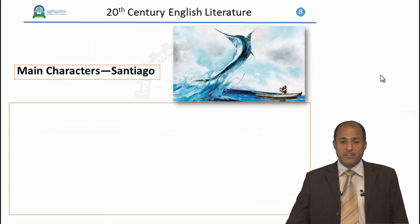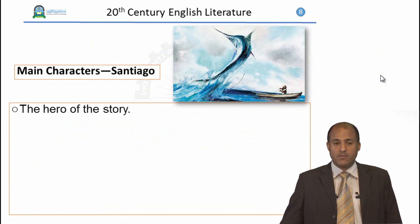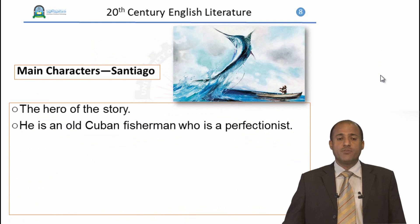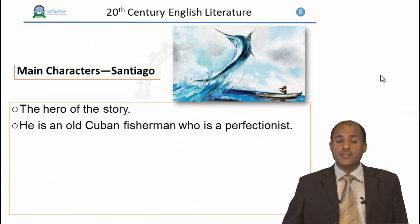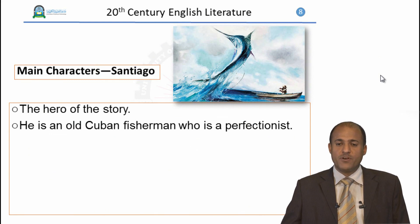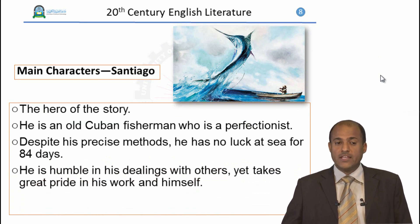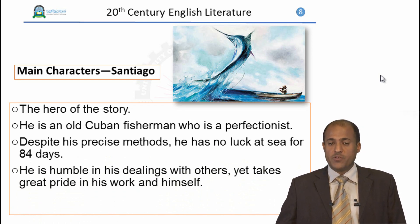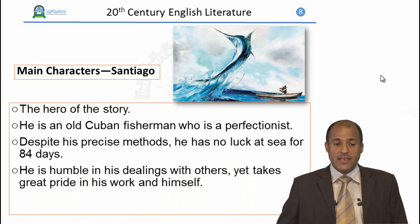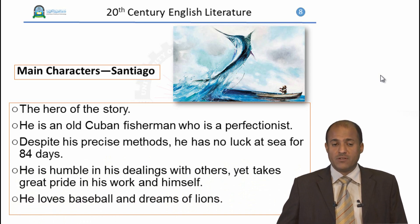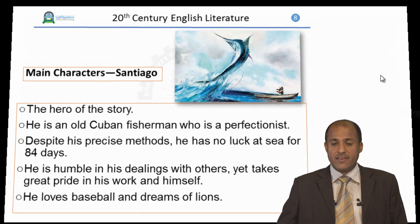Now we are going to sketch the characters. We will start with the central character of Santiago, the old man himself. He is the hero of the story and he is an old Cuban fisherman who is a perfectionist. Despite his precise methods, he has no luck at sea for 84 days, and he is humble in his dealings with others yet takes great pride in his work and himself. He loves baseball and dreams of lions on the beach.